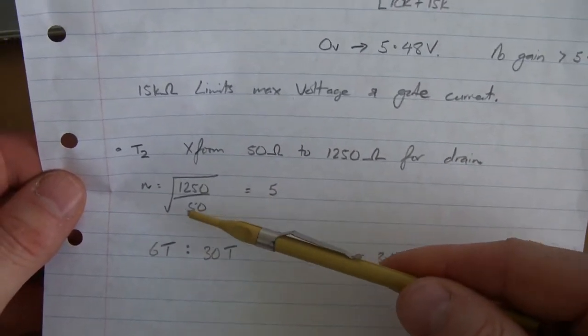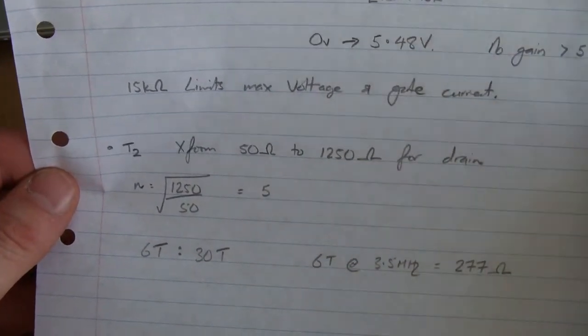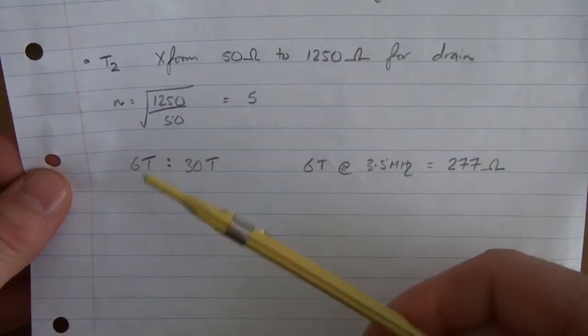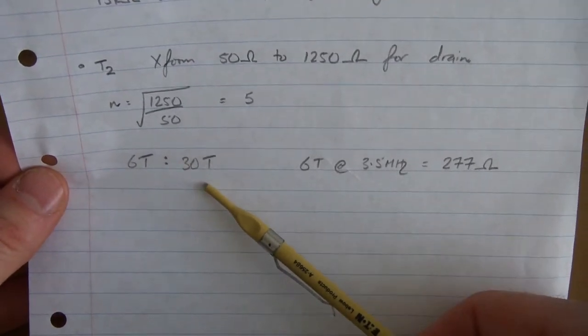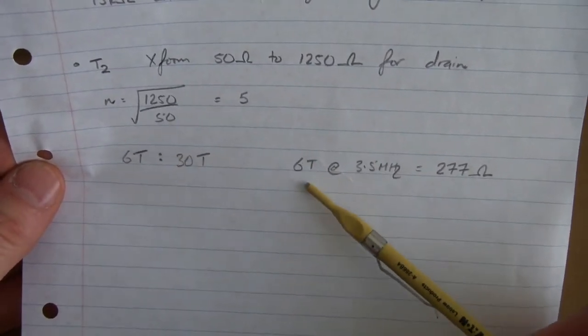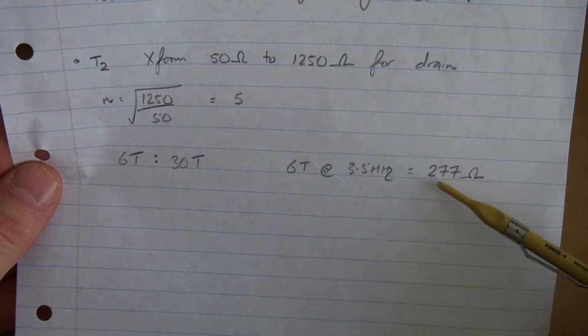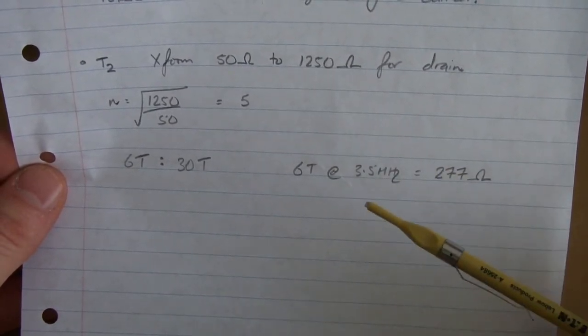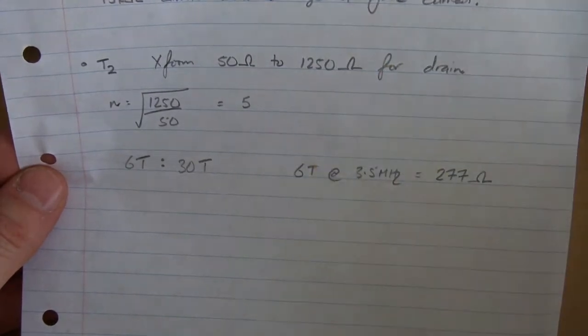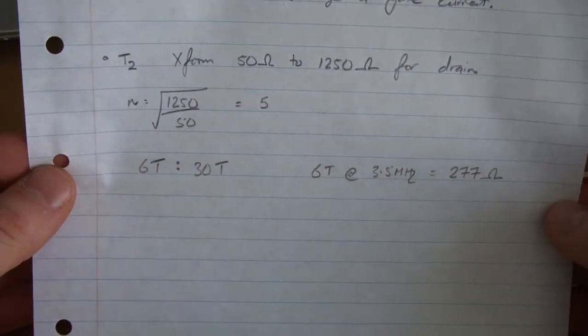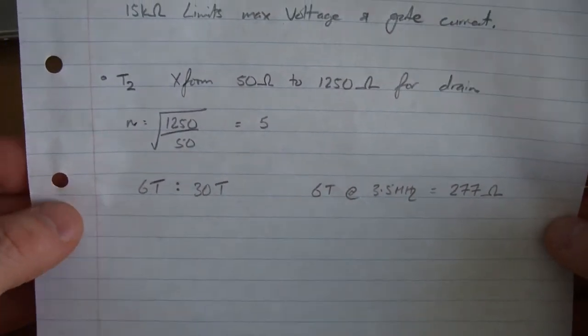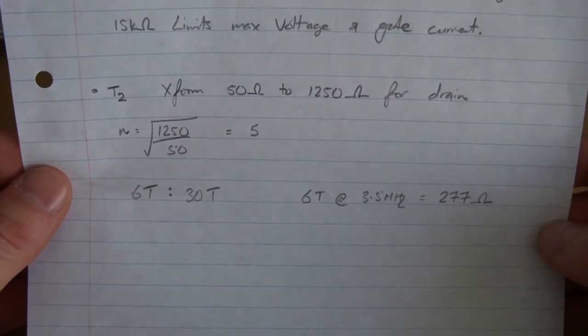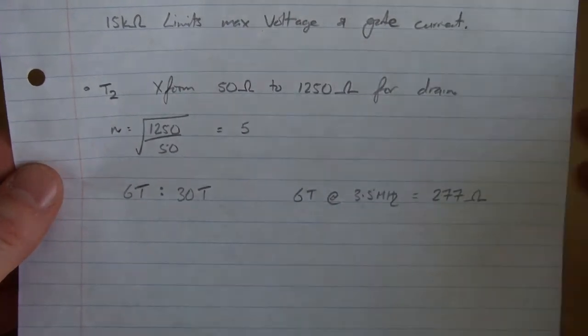So 1250 for a turns ratio of 50 gives us 5. And I'm going to use 6 turns to 30 turns, 6 times 5 is 30. So 6 turns at our lowest frequency is 277 ohms, which meets our greater than a minimum of 4 times 50. I'm getting quite close to, well in fact it's 5.5 to 25. So we've got a ratio of 5 there. So anyway, so I'm going to break there.